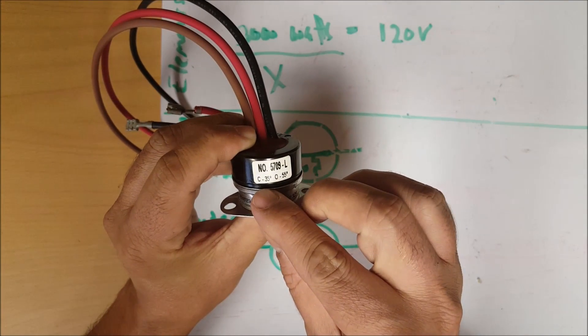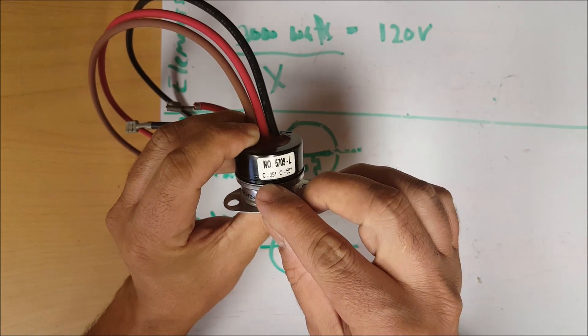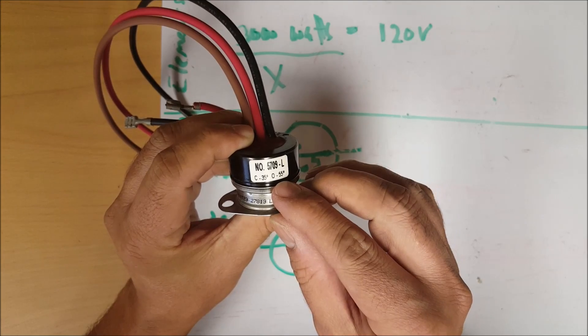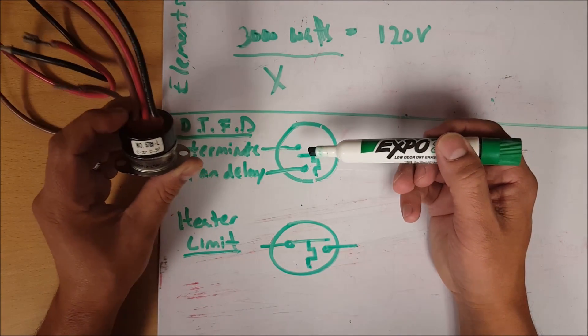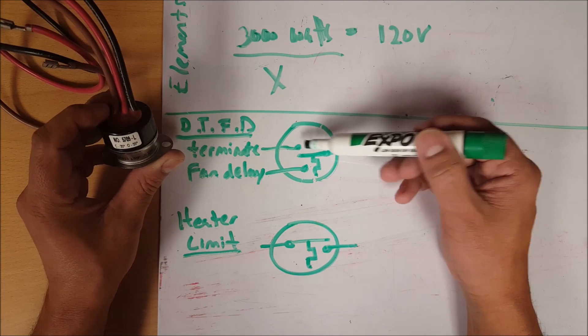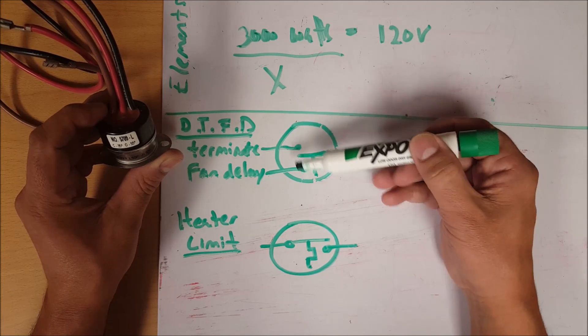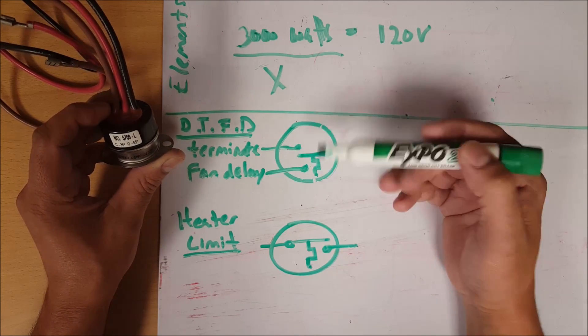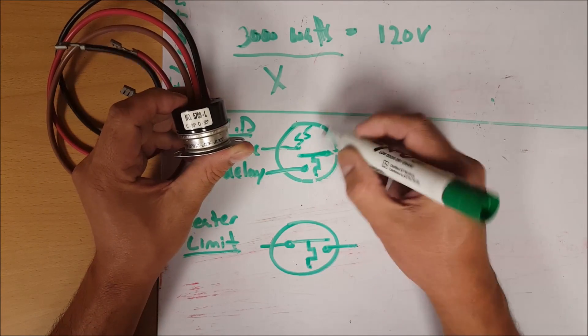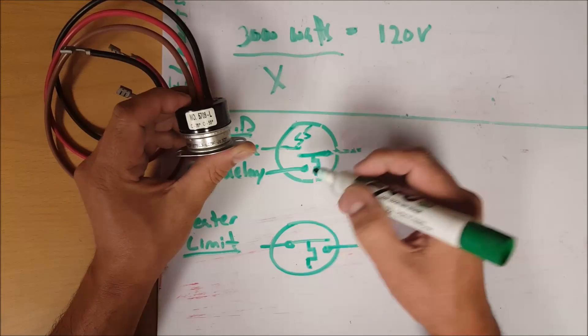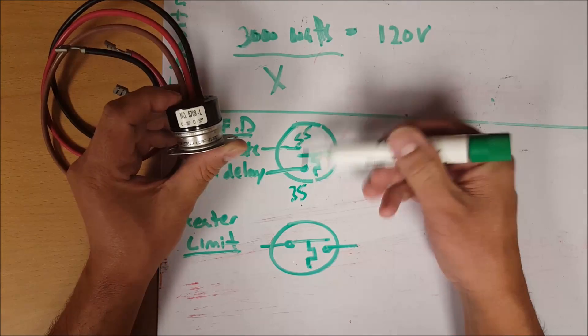So this is representing that it closes at 35 degrees and opens at 55 degrees. We have basically two switches in one. On temperature rise this side will close. On temperature fall this side will close. So based on these specs, at 55 degrees this side will close and at 35 degrees on this end this side will close.